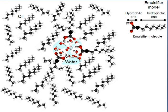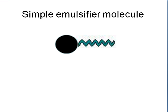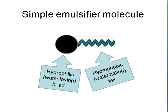And that will look something like this. We represent the zigzaggy bit of the molecule as the oil-loving part, and we just have a round circle for the water-loving bit. So here's the hydrophilic water-loving head and the hydrophobic water-hating tail.